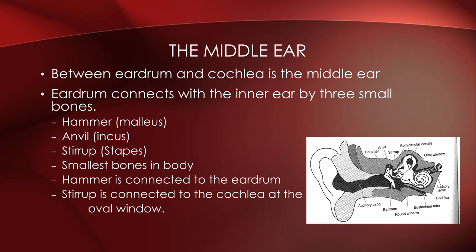The middle ear is between the eardrum and the cochlea. The sound wave travels through the outer ear, through the ear canal, and hits the eardrum. It then connects with the inner ear by three small bones: the hammer, the anvil, and the stirrup — also known scientifically as the malleus, incus, and stapes. For any test, just say hammer, anvil, and stirrup. They are the smallest bones in the body. The hammer is connected to the eardrum, the anvil to the hammer, and the stirrup to the anvil and the cochlea at the oval window.